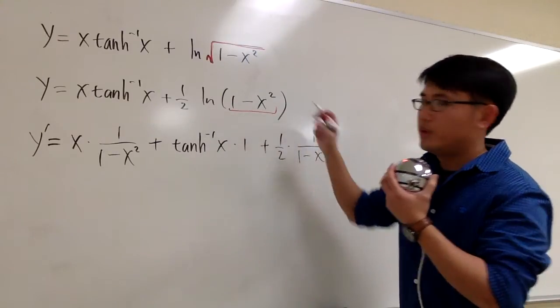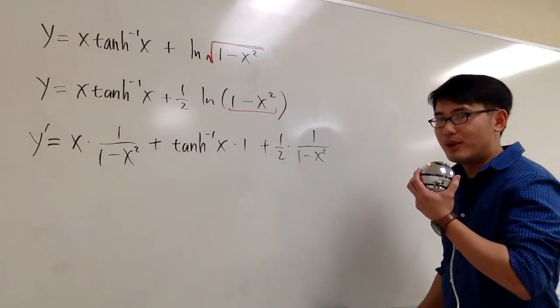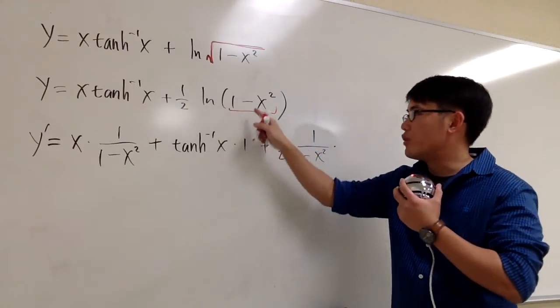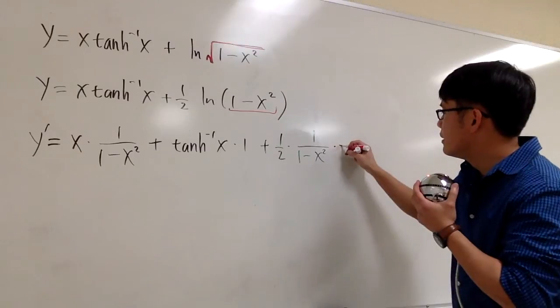But then inside, we have to do the derivative of the inside as well, because of the chain rule. The derivative of 1 is 0. The derivative of negative x squared is negative 2x.